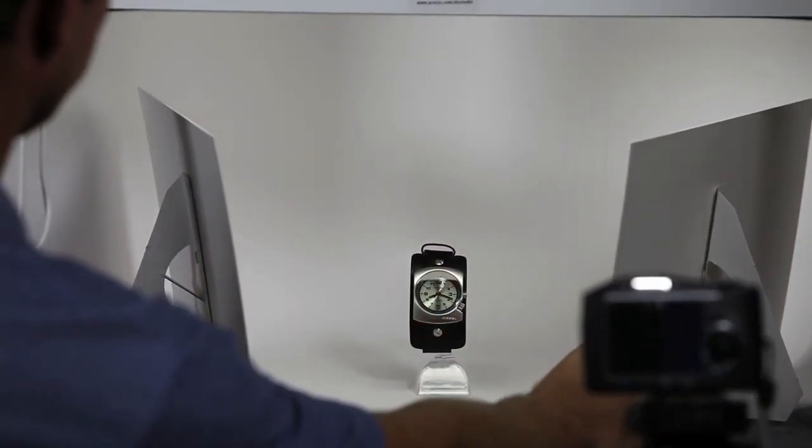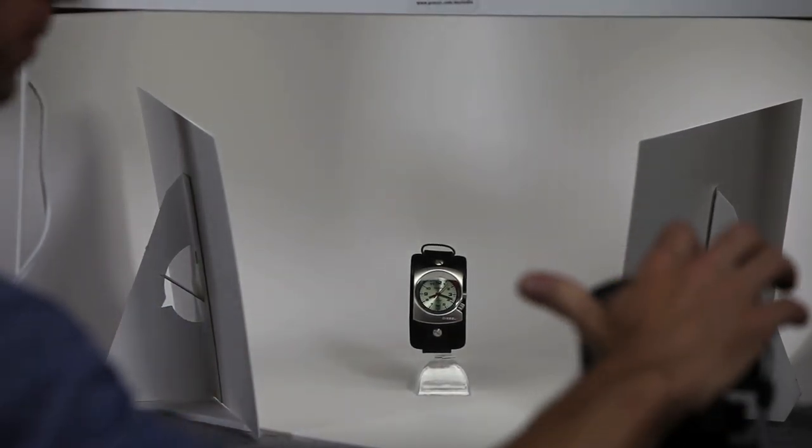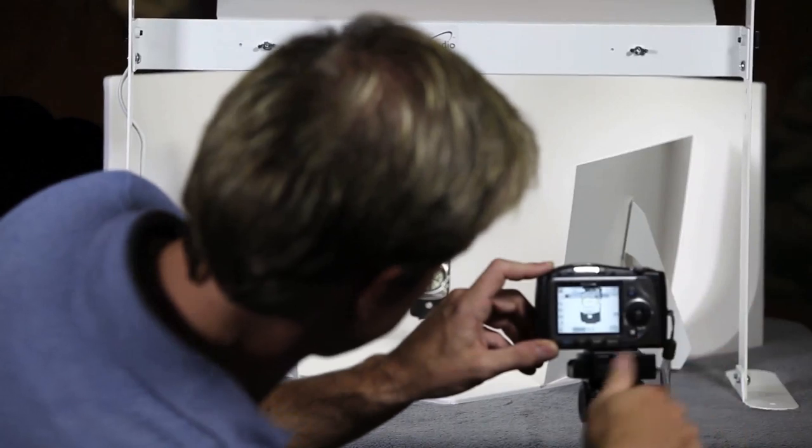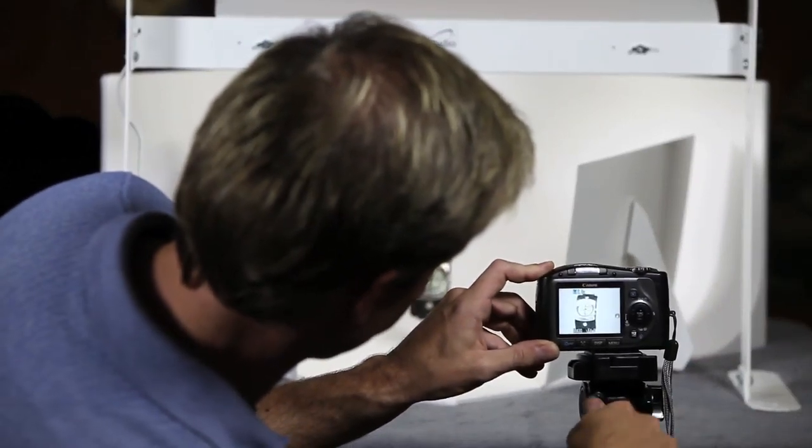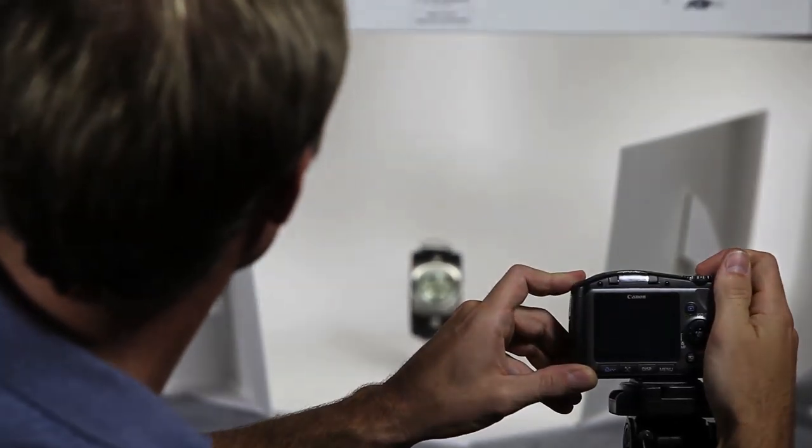I'm going to get the bounce cards fairly close to reflect as much light onto it as possible. Now, I'm using just a basic Canon PowerShot. This is actually about three years old. I'm going to zoom in on my item, get it to fill the frame, and take a shot.